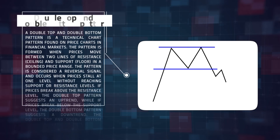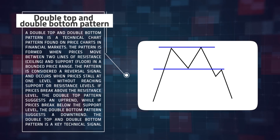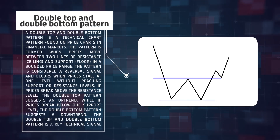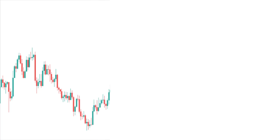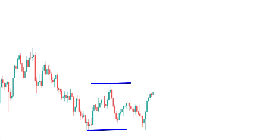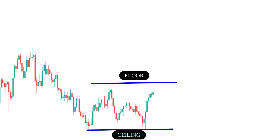A double top and double bottom pattern is a technical chart pattern found on price charts in financial markets. The pattern is formed when prices move between two lines of resistance (ceiling) and support (floor) in a bounded price range. The pattern is considered a reversal signal and occurs when prices stall at one level without reaching support or resistance levels.